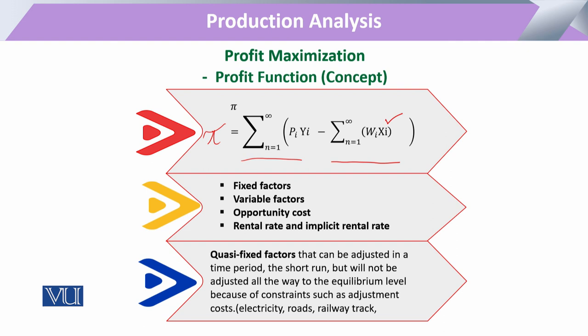But before defining this profit function, we have to keep in mind which factors of production are fixed and which are variable, and which factors are within the firm's control. We need to consider whether an input used in the production setup can be retrieved by the firm or not. Looking at examples from industry and agriculture helps clarify this.